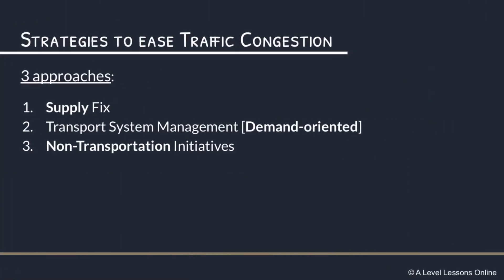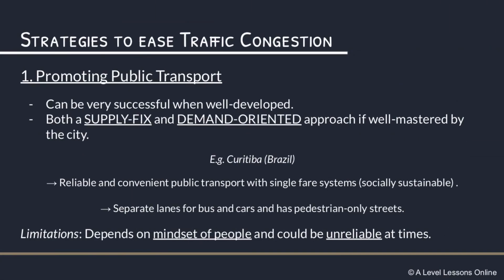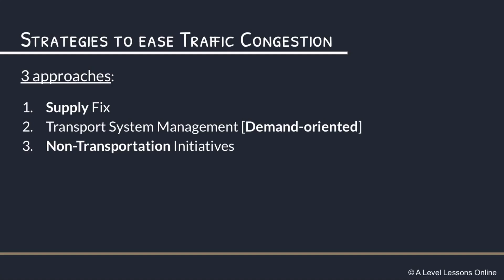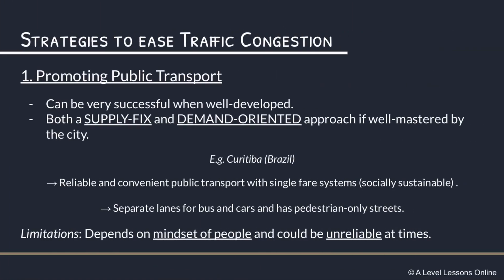Now we come to the strategies to ease traffic congestion. There are three main approaches: firstly, the supply fix — trying to fix the supply of road and transport infrastructure; secondly, demand-oriented policies — managing the unrestrained demand on the road; and thirdly, non-transport initiatives — other measures that don't fall within demand or supply. The first and most important policy you need to know thoroughly is promoting public transport.